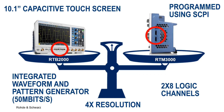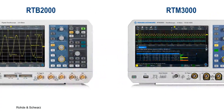These instruments are not interchangeable, though, and knowing some key differences can help you choose which one is best for your application. Perhaps the most important factor to consider when choosing an oscilloscope is the characteristics of the signal you plan to analyze.